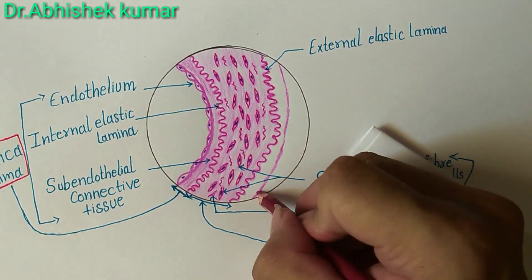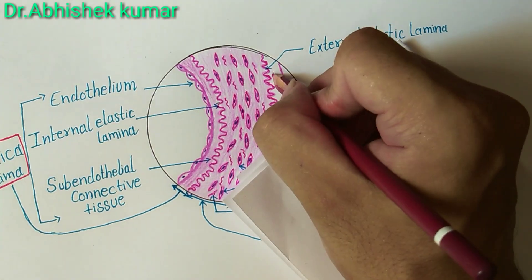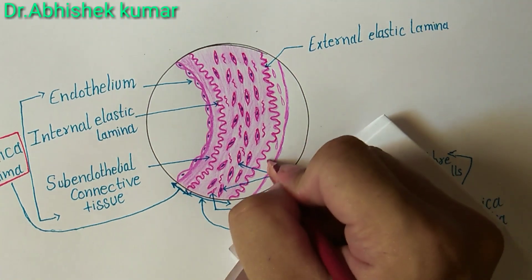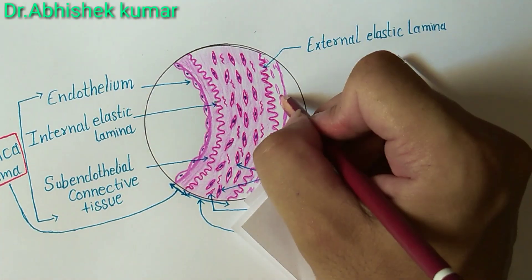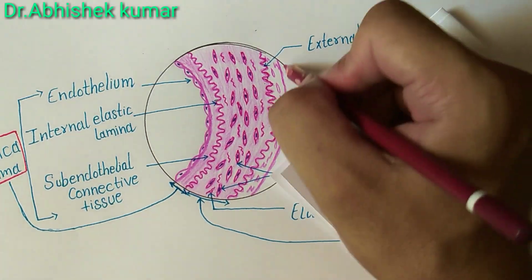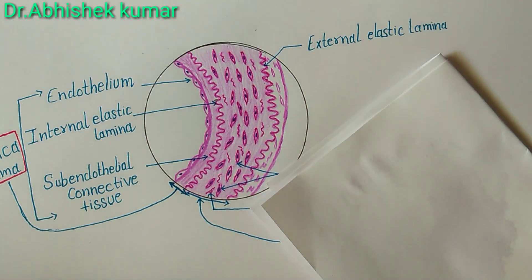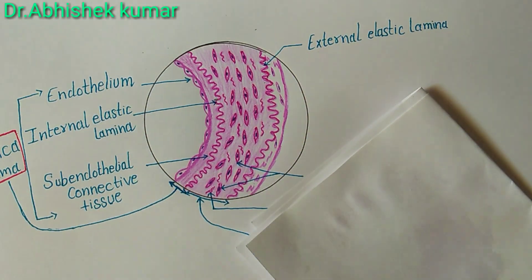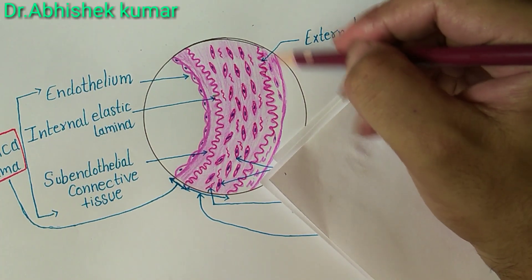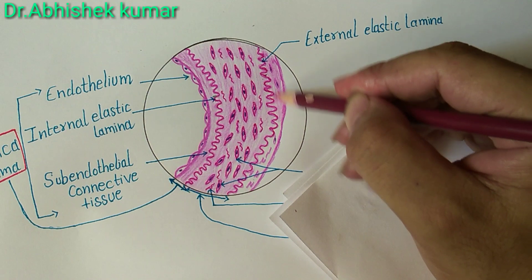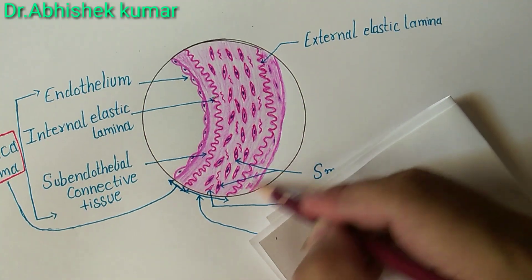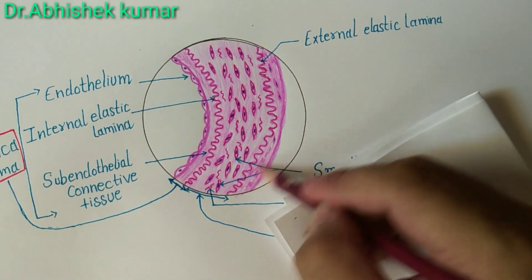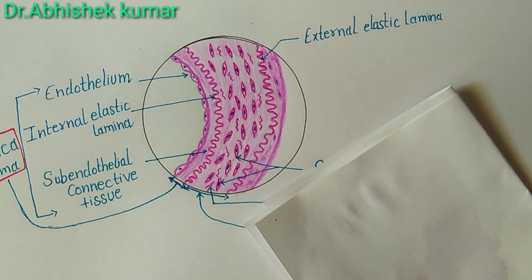The tunica adventitia. The inner part of tunica adventitia contains more elastic fibers than collagen fibers, and it also includes the external elastic lamina. So basically from the external elastic lamina onwards, it contains very few collagen fibers and more elastic fibers in the inner part of tunica adventitia.